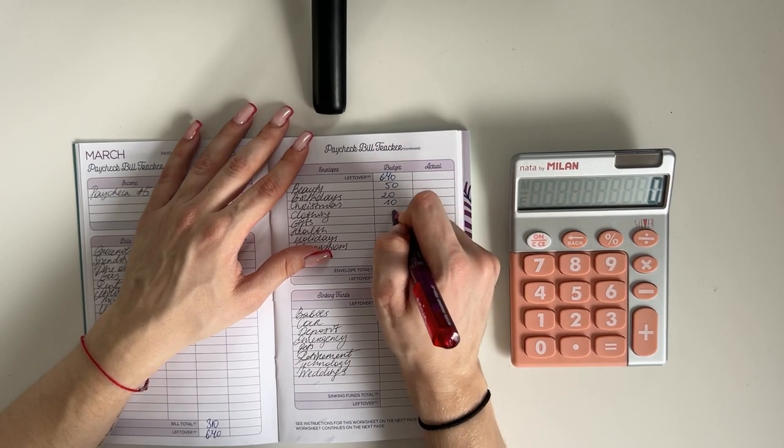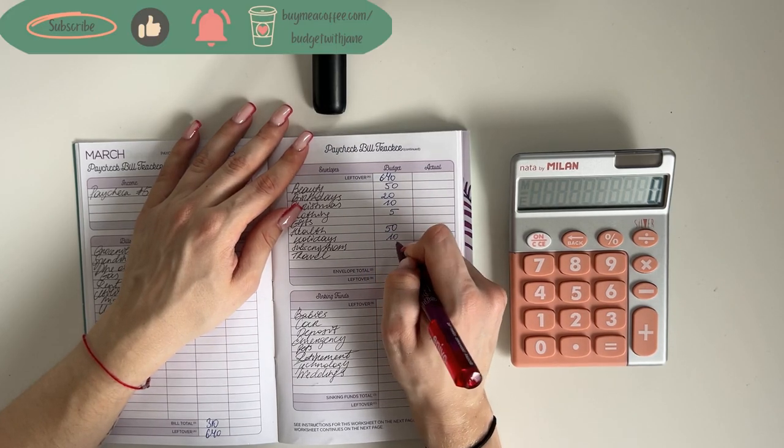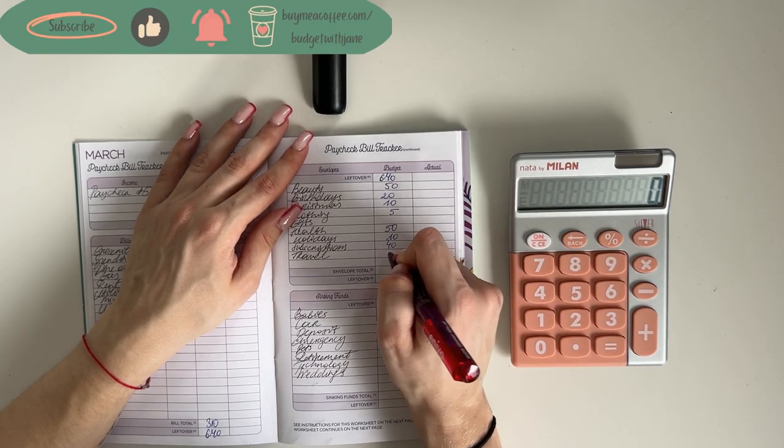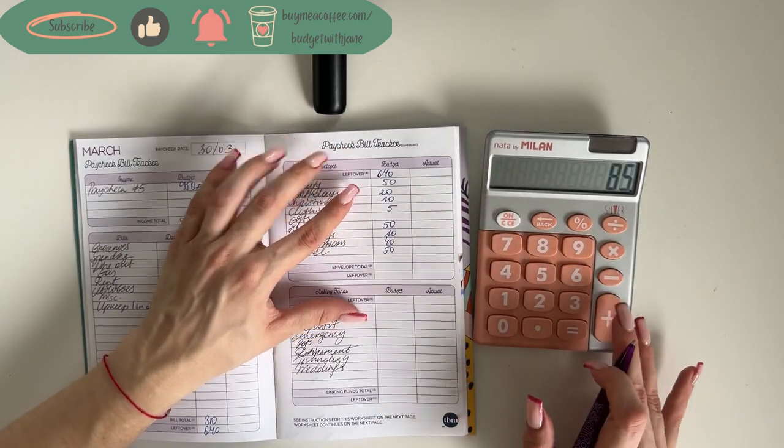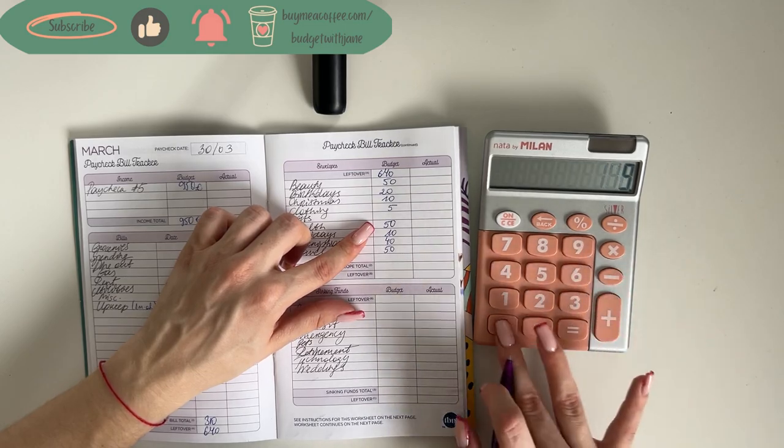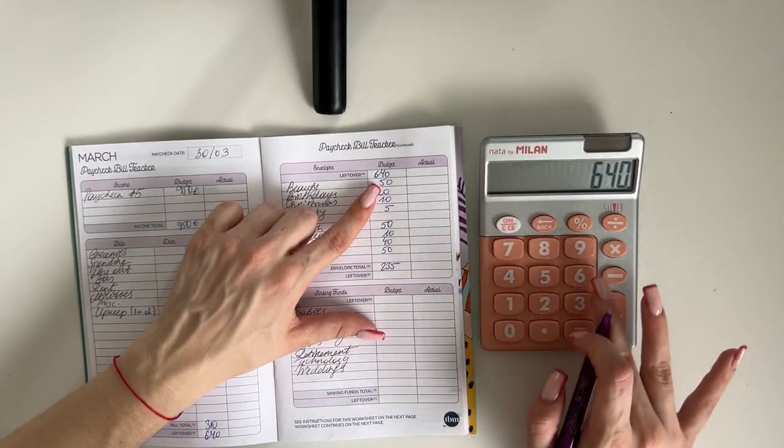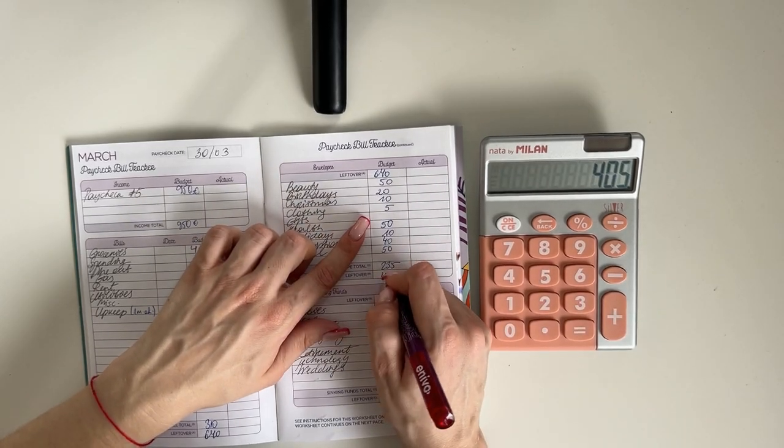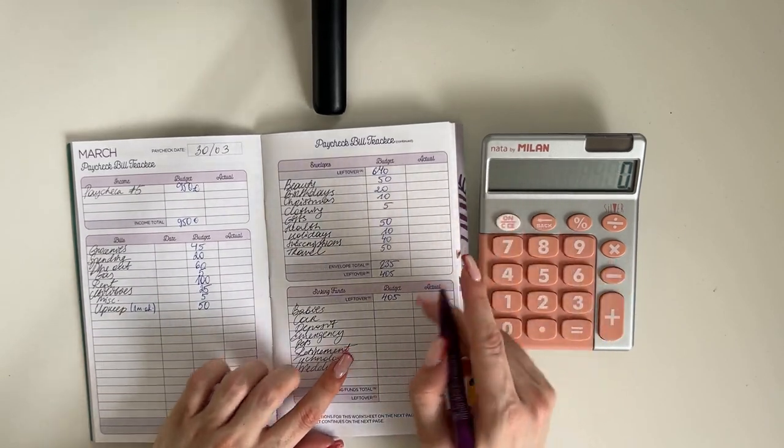So we are stuffing 50 into beauty, birthdays 20, Christmas is going to get a 10, and clothing a 5. We're putting 50 in health, 10 in holidays, 14 in subscriptions, and 50 in travel. So in total that's 235 euros. So 640 minus 235, 405.